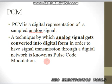In PCM we have three parts. The first one is the transmitter, then the transmission path, and the last one is the receiver side. We are going to look at these three parts.